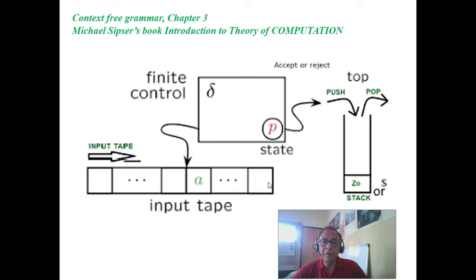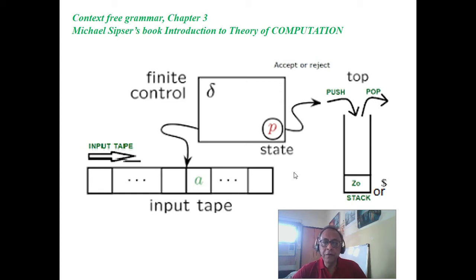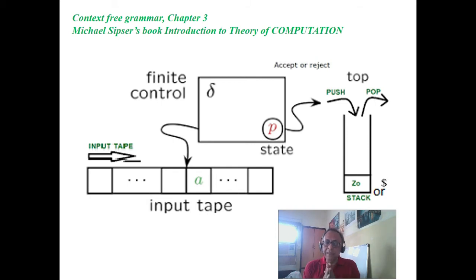See, at the end, if it is a^n and b^n - say four A's and four B's - when the first A comes, push A; second A, push capital A; third A, fourth A. Then whenever one B comes, it pops the last-in-first-out A. Then another B comes, then the next A. Eventually the fourth B pops the last A. It will automatically come to the end of tape, and the stack should be empty.